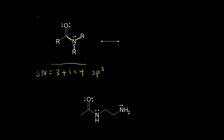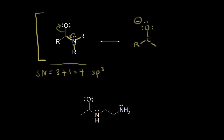However, now that we know resonance structures, we know that lone pair of electrons is not localized to that nitrogen — it's delocalized in resonance. We could take that lone pair and move it in to form a pi bond, which forces us to push some pi electrons off onto the oxygen. So the other resonance structure has the top oxygen with three lone pairs and a negative one formal charge, a double bond between carbon and nitrogen, and a plus one formal charge on nitrogen.